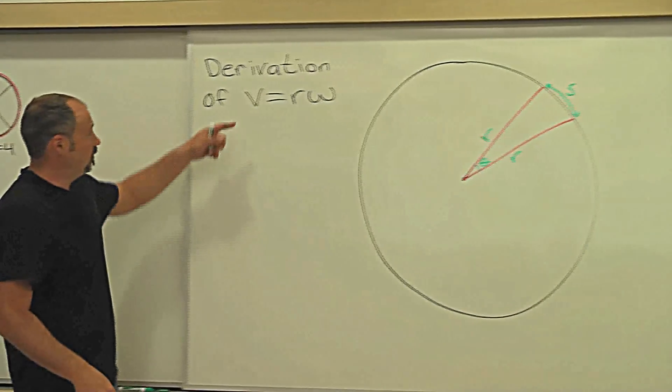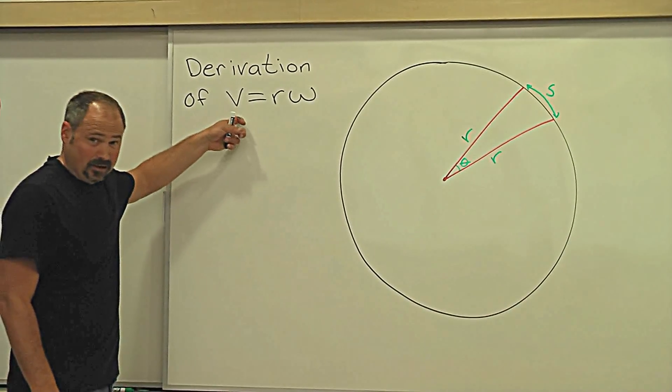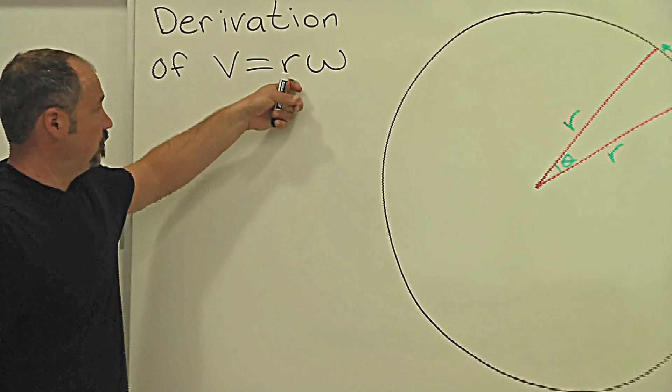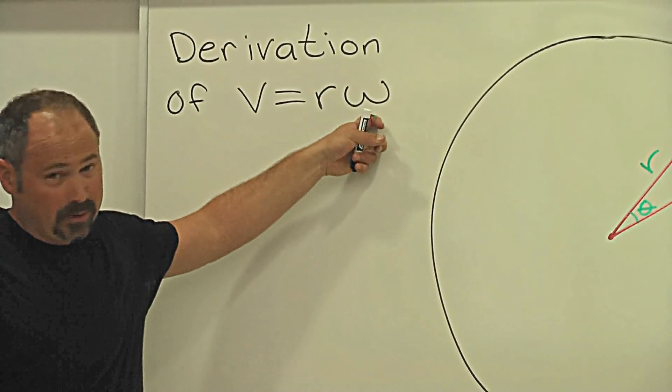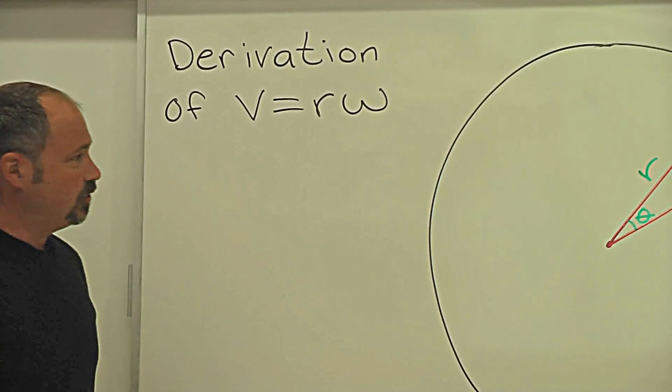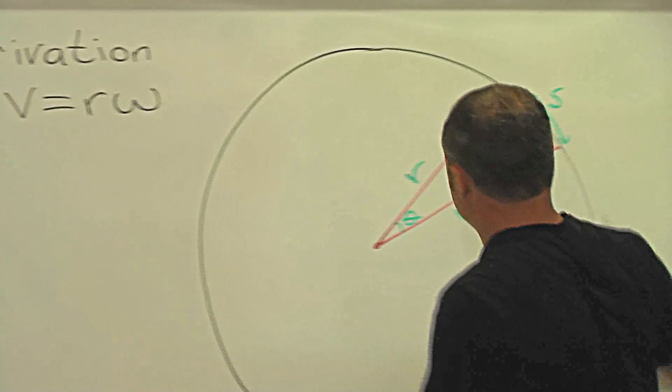Let's derive the known law that the linear velocity is equal to the radius multiplied by the angular velocity. So here's the situation of something going in a circle.